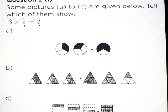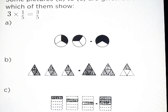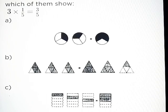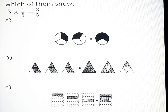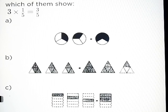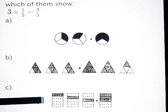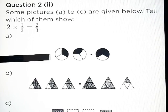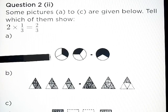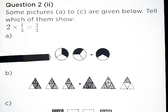Question number 2, Part A: Some pictures A to C are given below. Tell which of them show 3 into 1 upon 5 is equal to 3 upon 5. Answer: represented by part C. Part B: 2 into 1 upon 3 is equal to 2 upon 3. Answer: represented by part A.